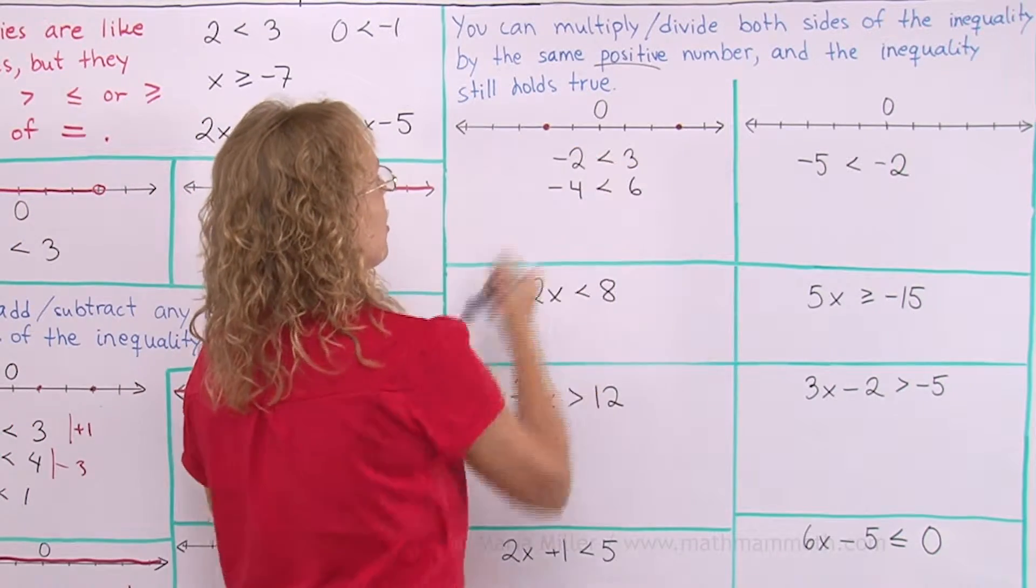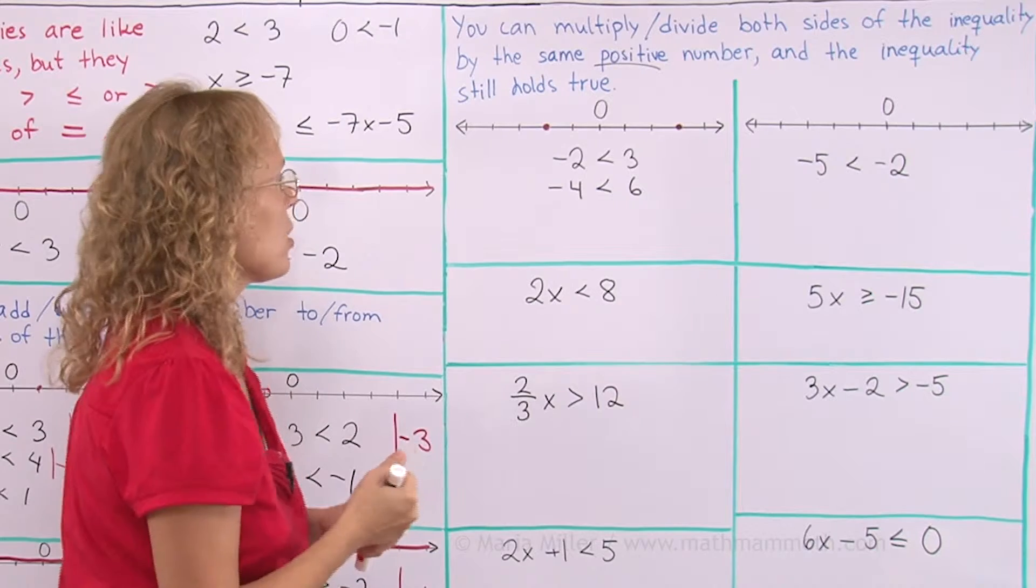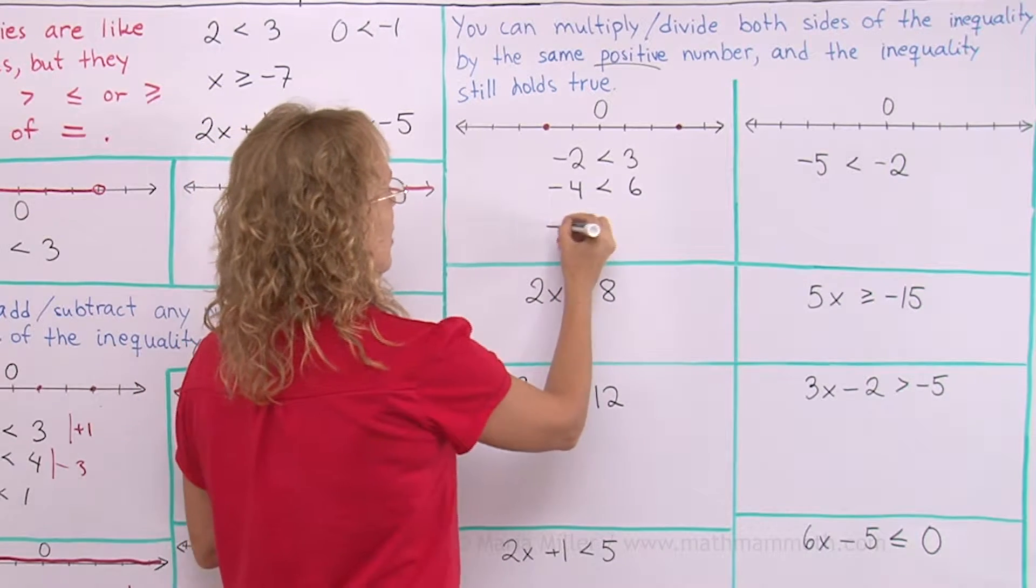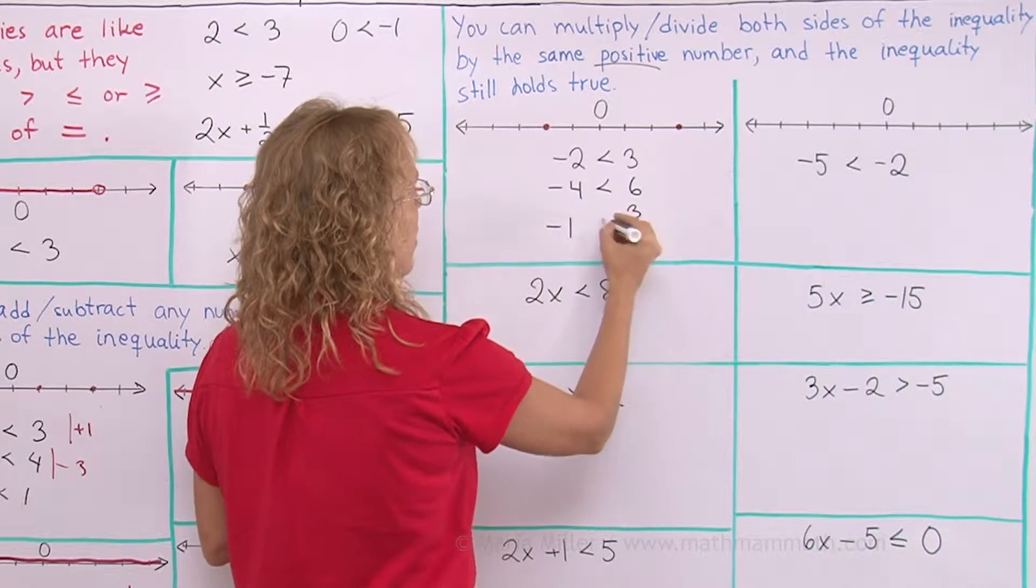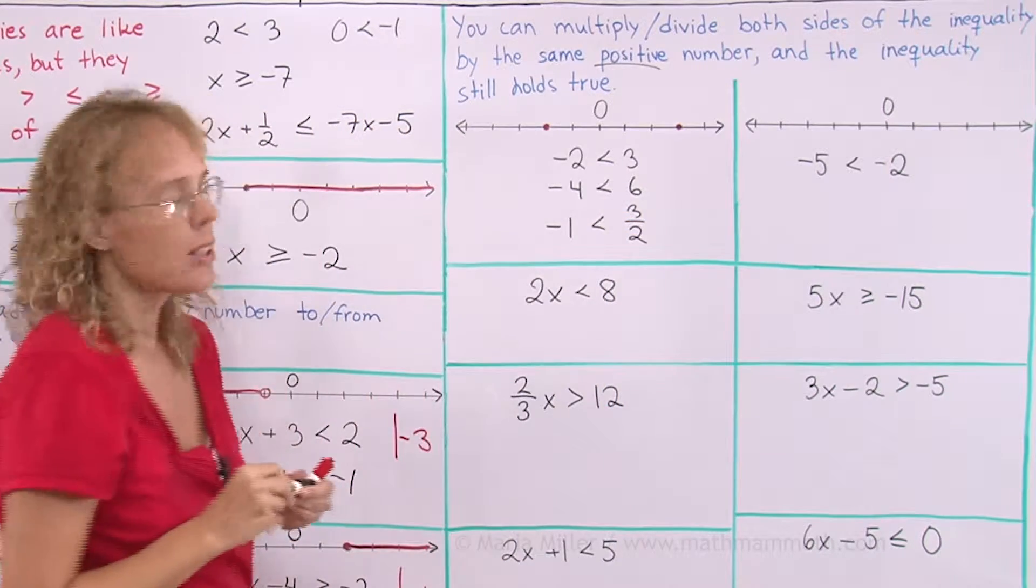Let's say that I would take this original and divide both of them by 2, then I would get negative 1 and then over here 3 over 2. Yes, the inequality still holds true.